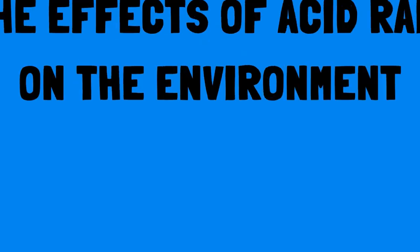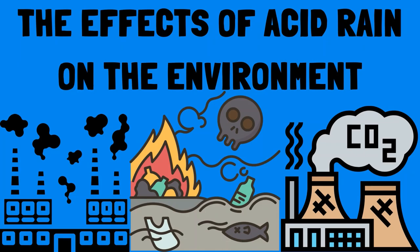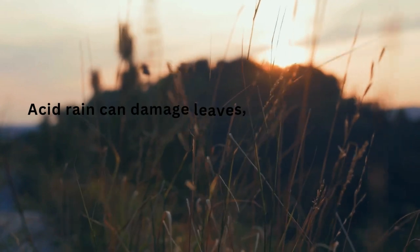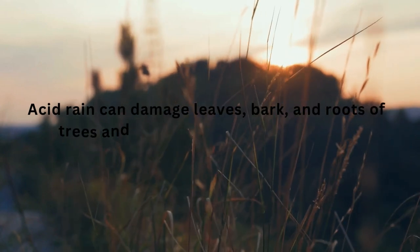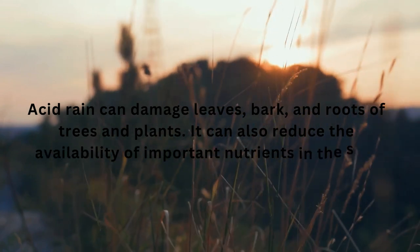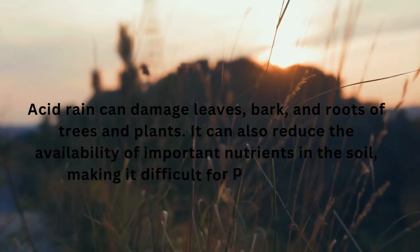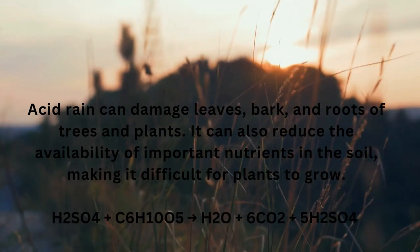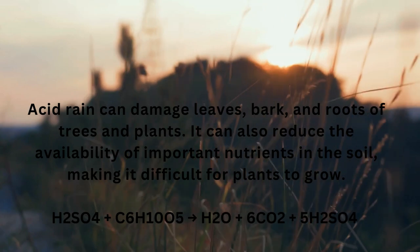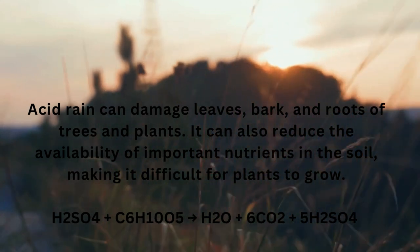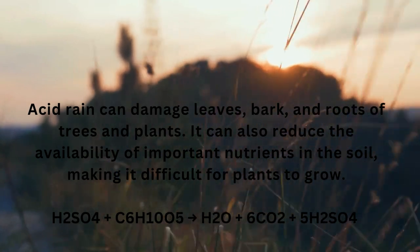The effects of acid rain on the environment. Number one, damage to vegetation. Acid rain can damage leaves, bark, and roots of trees and plants. It can also reduce the availability of important nutrients in the soil, making it difficult for plants to grow. H2SO4 reacts with cellulose (C6H10O5) in a chemical reaction.